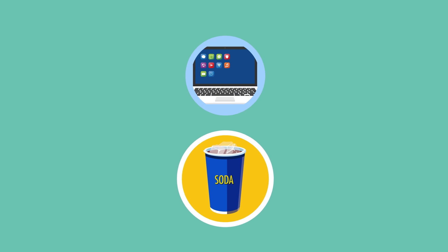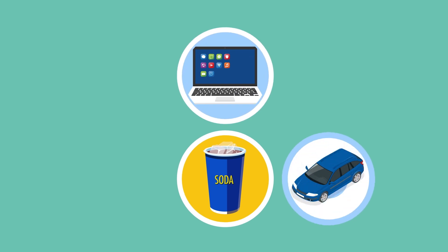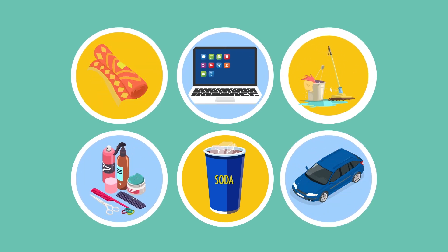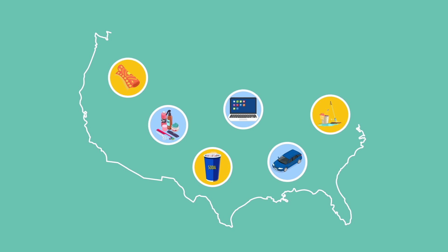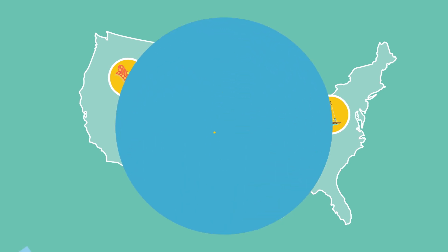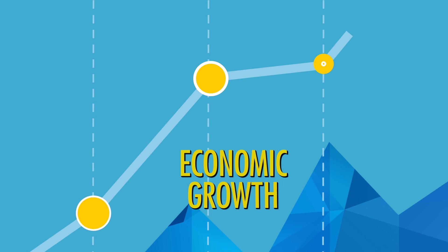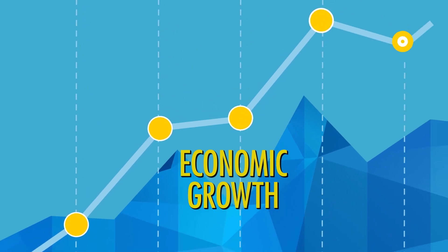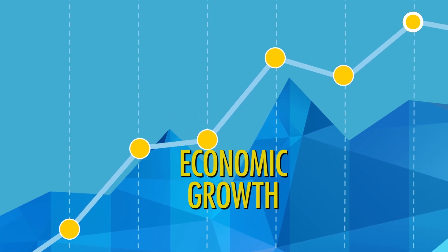Soda. Software. Cars. Carpets. Hairstyling. Housecleaning. These are just some of the many goods and services produced within a country every year. It's important for nations to be able to measure all goods and services they create annually so they can monitor their economic growth over time. So how can a country measure the overall value of what it produces?